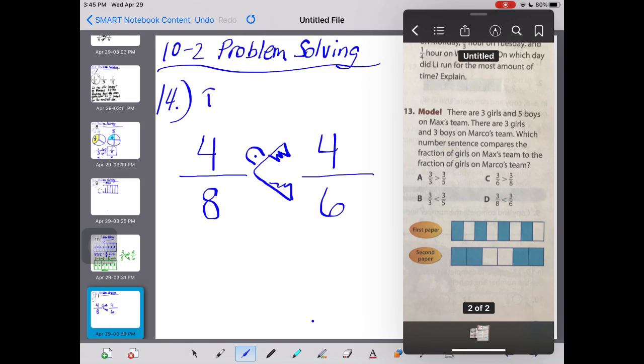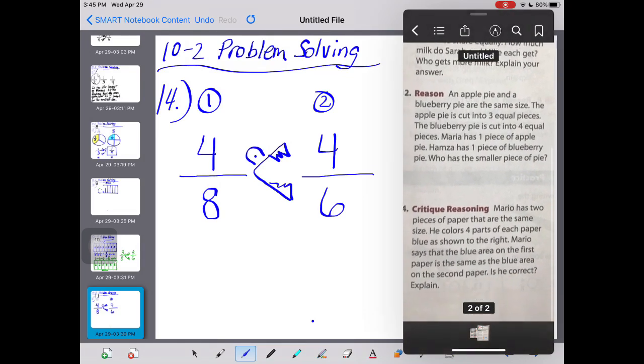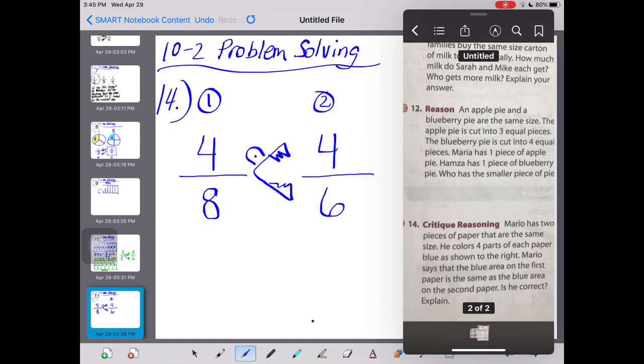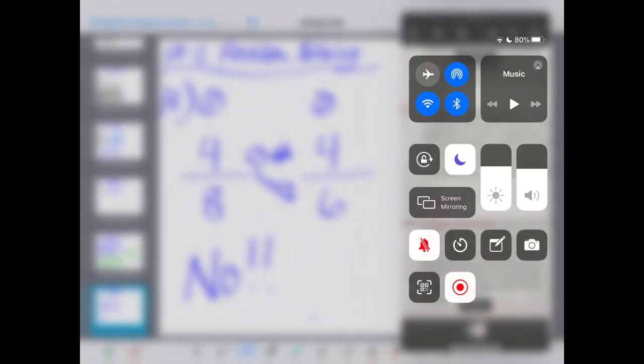So now this is paper number one and this is paper number two. So I've forgotten, what did we say that again? Let's take a look over here. Here it says Mario says that the first paper is the same as the blue area on the second paper. Is he correct? No. He is not. The first paper is actually less. The blue sections are less than the second paper. You are done for the day, guys. Thanks so much. Thanks for listening.